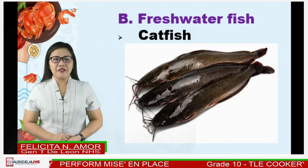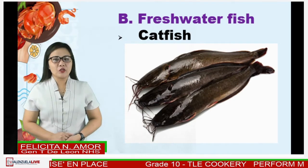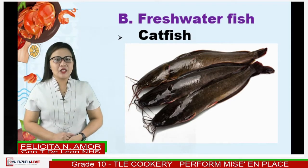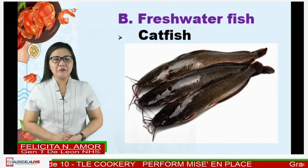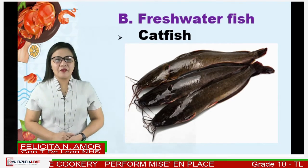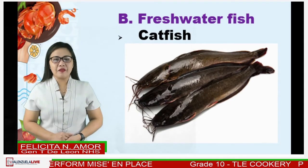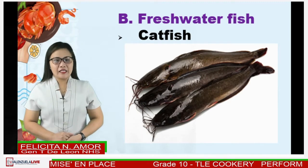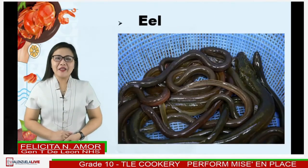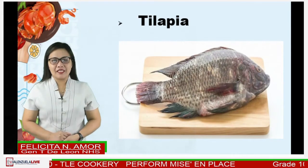Another kind of fin fish is freshwater fish. Freshwater fish are those that spend some or all of their lives in fresh water, such as rivers and lakes, with a salinity of less than 1.05%. These environments differ from marine conditions in many ways, the most obvious being the difference in levels of salinity. Examples are catfish (or hito in Filipino), eel, and tilapia.